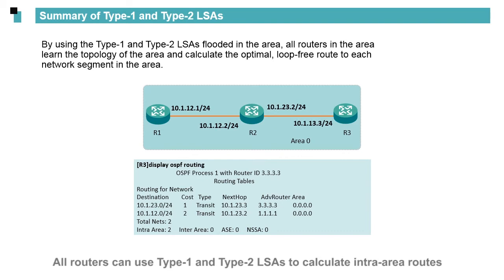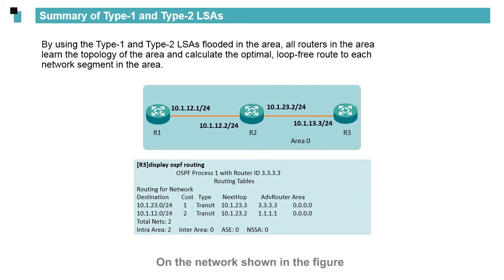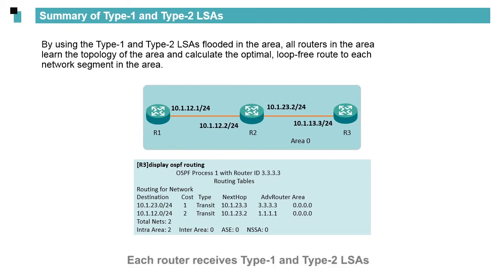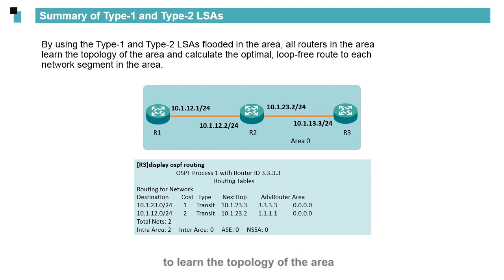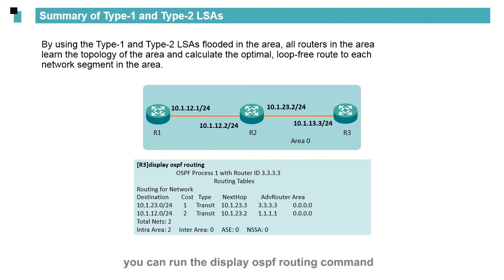Type 1 and Type 2 LSAs are flooded only within the local area. All routers can use Type 1 and Type 2 LSAs to calculate intra-area routes. On the network shown in the figure, all interfaces of R1, R2, and R3 are connected to Area 0. Each router receives Type 1 and Type 2 LSAs from the other two routers and adds them to its Link State Database (LSDB) to learn the topology of the area. To view the route information calculated by a router, you can run the display OSPF routing command in the system view of the router.